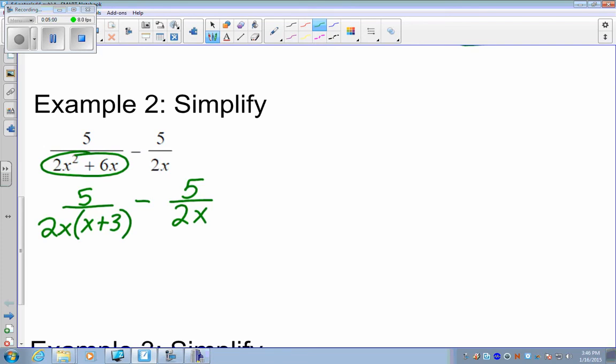Well, now I see both of my denominators have 2x in them. The only difference is, one has an x plus 3 and the other does not. So the only thing you really have to do is multiply the second fraction by x plus 3 over x plus 3. This will give us like denominators. And if you didn't factor right away, you would not have seen this, most likely.